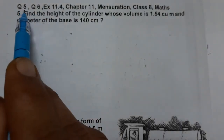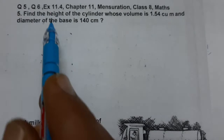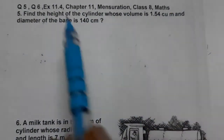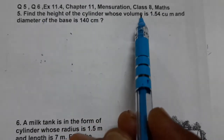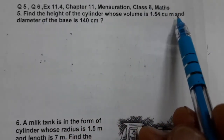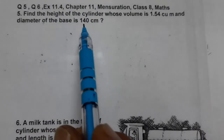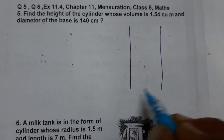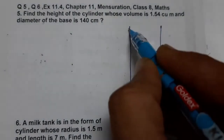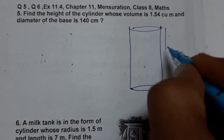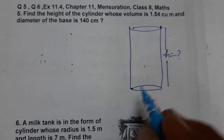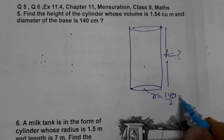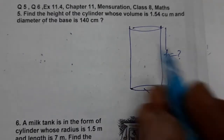Hello students, today we are going to do questions 5 and 6 of Exercise 11.4, Chapter 11. Question 5: find the height of a cylinder whose volume is 1.54 cubic meter and the diameter of the base is 140 centimeter. We need to find the height of this cylinder. The diameter is 140 cm, so radius = 140/2 = 70 centimeter.